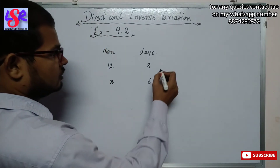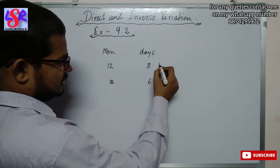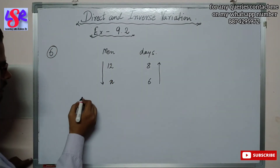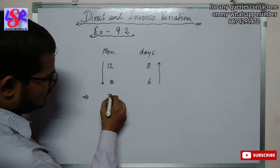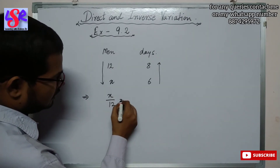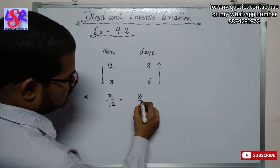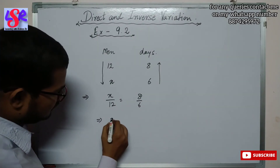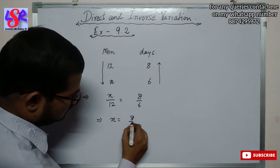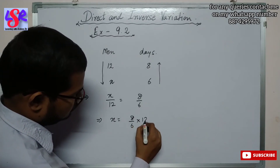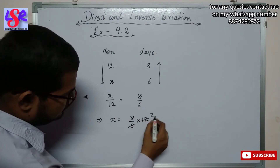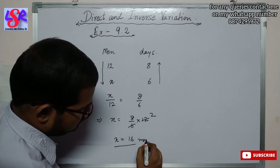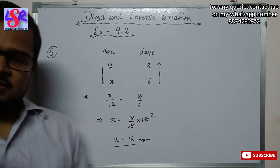We put the arrow in this direction as 8 is greater than 6, then this will be in the downward direction. The equation becomes x upon 12 equals 8 upon 6. On cross multiplication, x equals 8 upon 6 into 12. Since 6 divides twice into 12, x equals 16. So 16 men are needed to complete the work in 6 days.